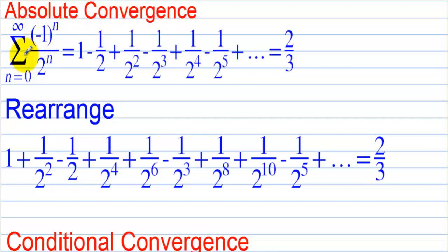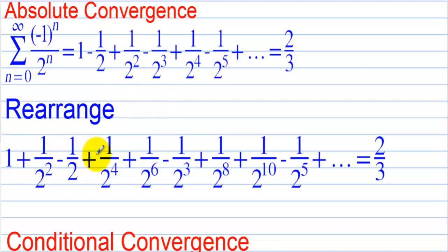Absolute convergence. Here we have a series of (-1)^n over 2^n, and that's going to alternate. If we add up all the terms, the sum is 2/3. If we rearrange the terms, we have 1 plus 1 over 2 squared minus 1/2 plus 1 over 2 to the fourth — mixing them up, this is still going to converge to 2/3. This is absolute convergence: it converges no matter how we rearrange the terms.